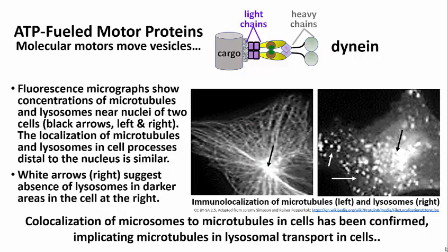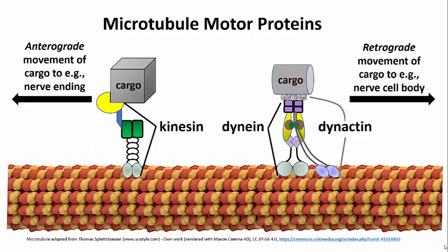Dynein is one of these motor proteins; kinesin is another. One of the key differences between dynein and kinesin, apart of course from structure, is that they carry vesicles in opposite directions along microtubules.